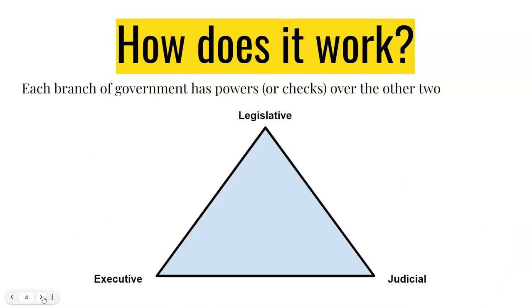So how does it work? We're going to use this triangle to show you different examples of how the three branches of government can limit each other. We've got the legislative branch at the top, we've got the executive branch, and then we have the judicial branch.